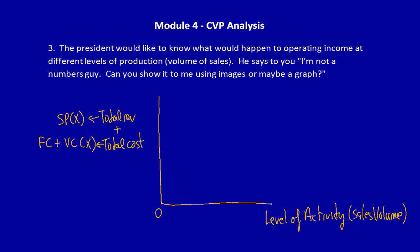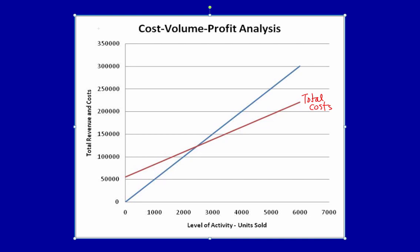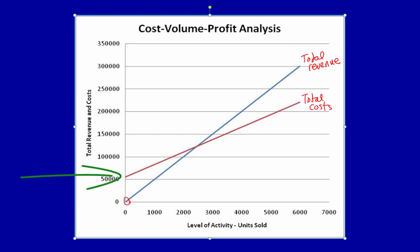I produced such a graph and I'll show it to you. Here's the graph that I produced on Excel — note that you could produce this graph manually also. The red line is the total cost line, and the blue line is the total revenue line. The total revenue line at zero units is always at zero, but the total cost line at zero units is equal to the fixed cost, which is $55,500.